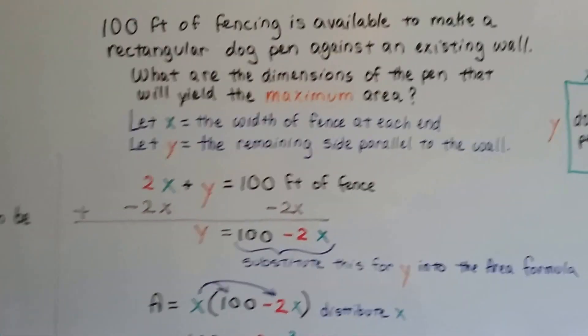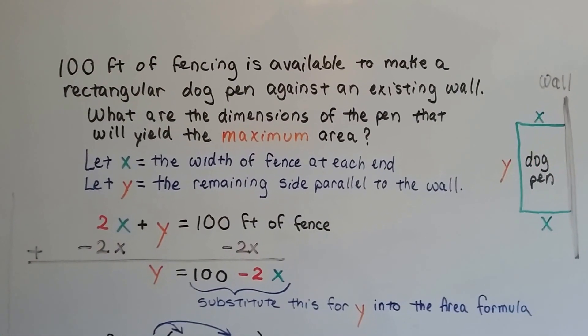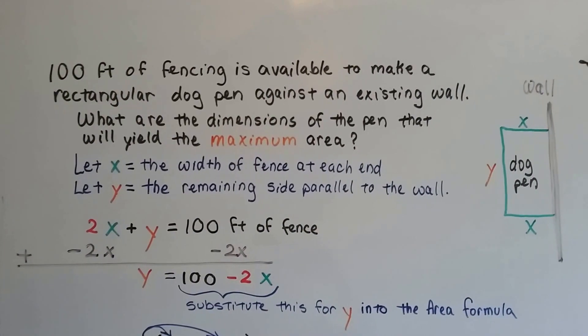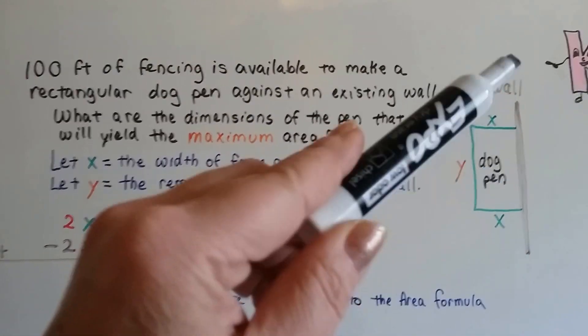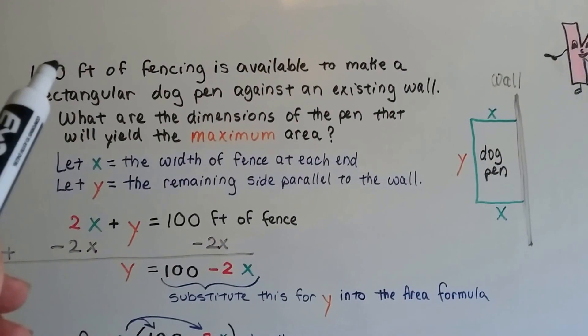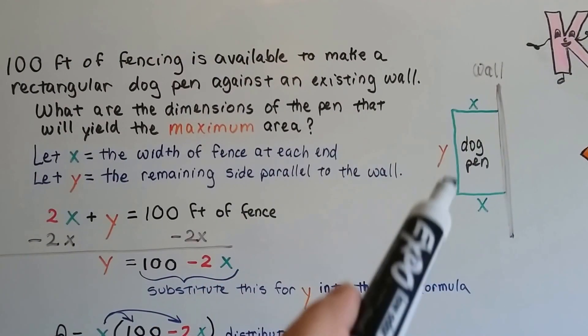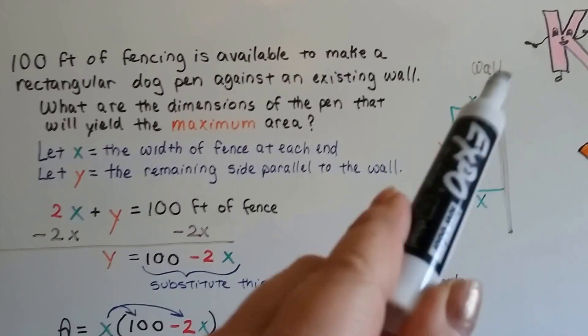We've got another fencing problem. 100 feet of fencing is available to make a rectangular dog pen against an existing wall. Here we have this existing wall of a building. We've got 100 feet of fence, so all we need is three sides because that wall is going to make the other side.